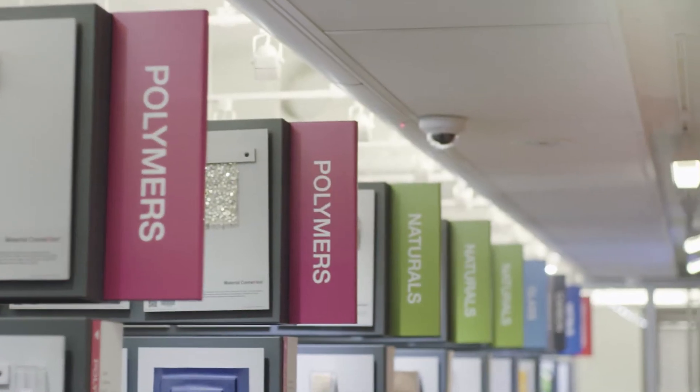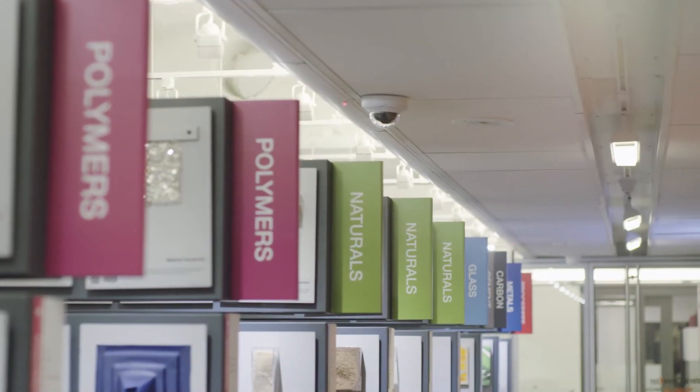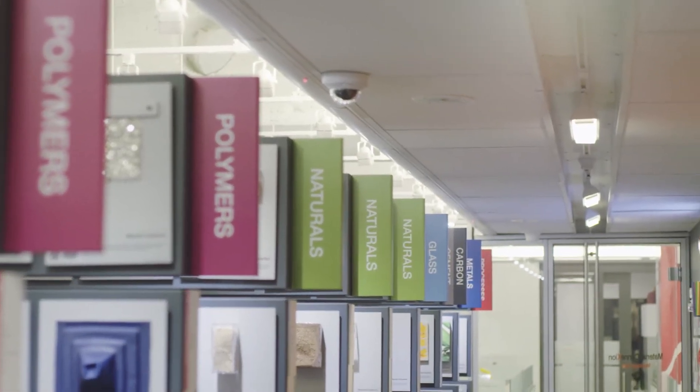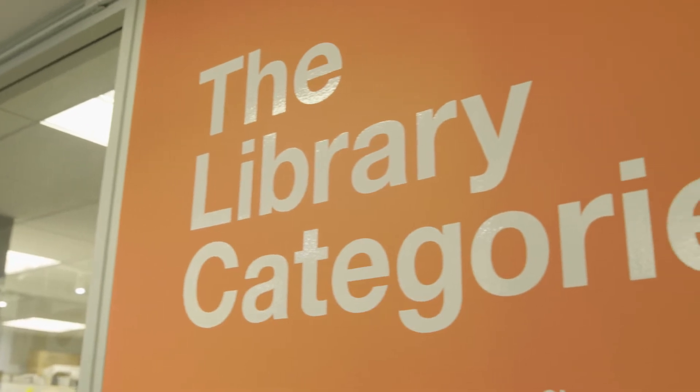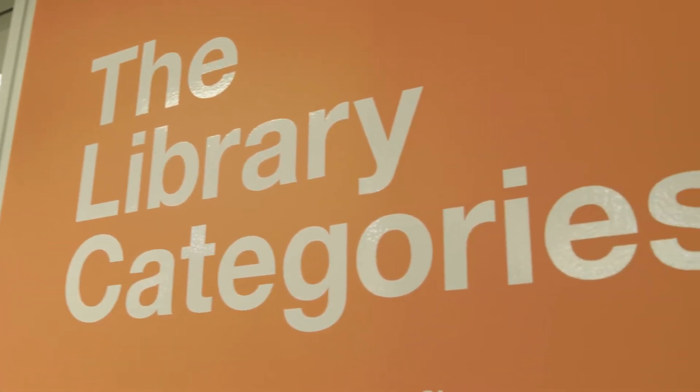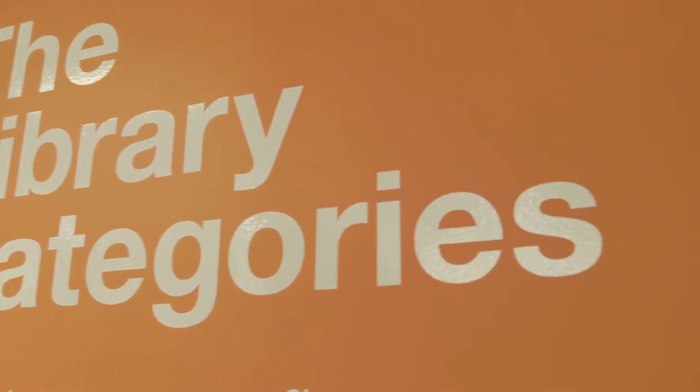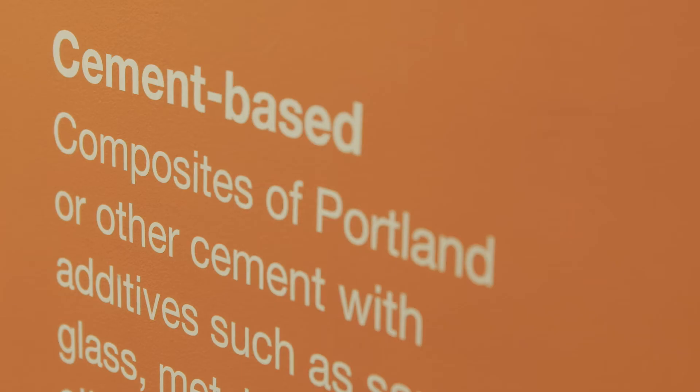As you look through our Material Connection flagship here in New York City, you'll notice each of the material aisles is labeled with a color code. Here at Material Connection we don't categorize our materials by intended use, but rather by chemical makeup. This ensures we respect the cross-industry knowledge and expertise that sets us apart.